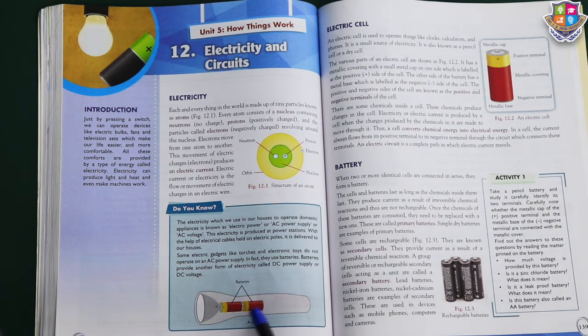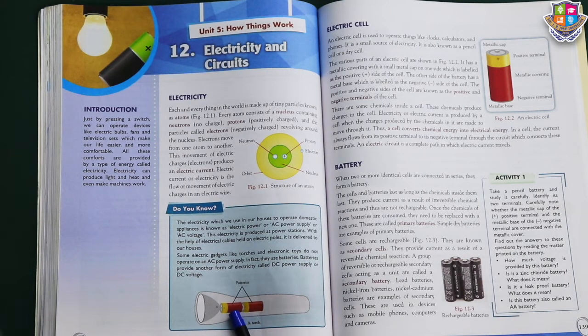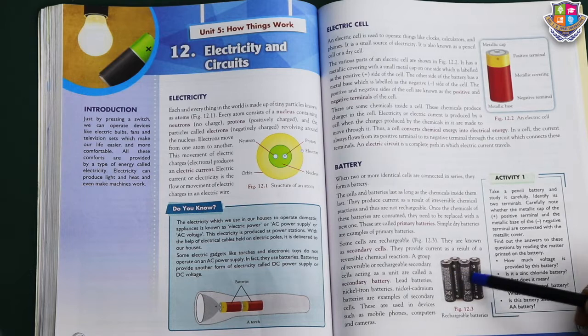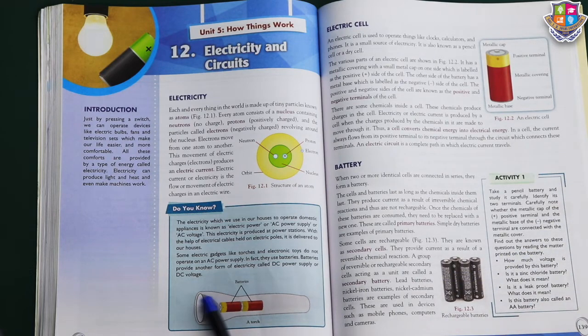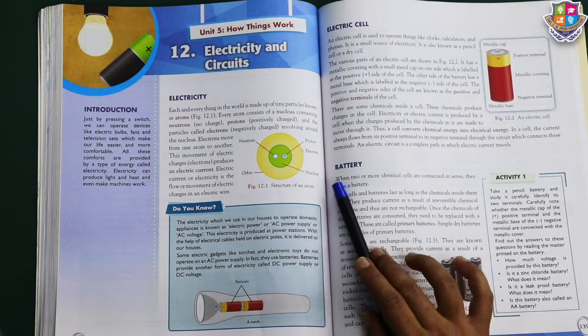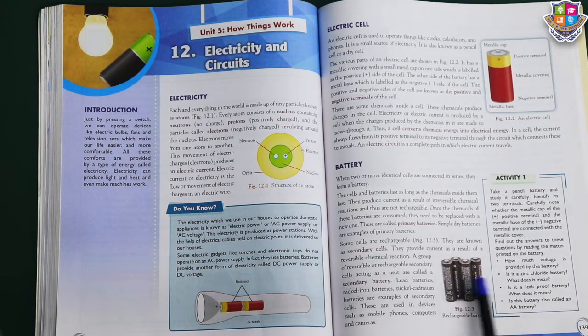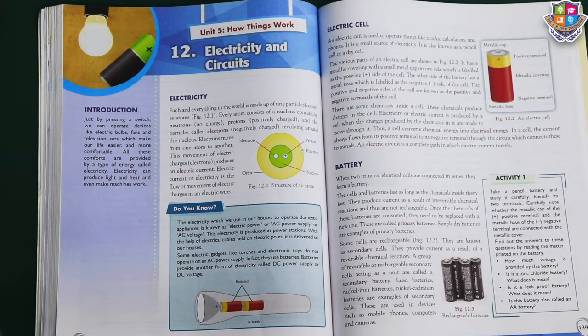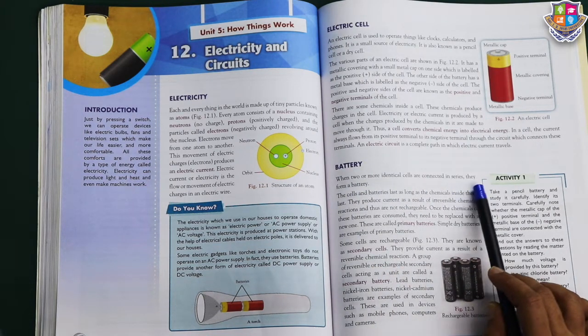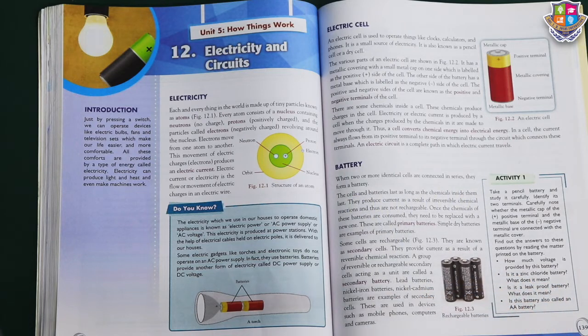Now we will understand about battery. When we place many cells together, it is called a battery. When two or more identical cells are connected in series, they form a battery. There is an activity here. In the presence of your parents, then you can do this.